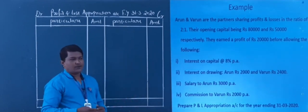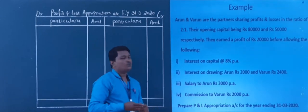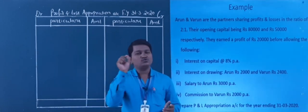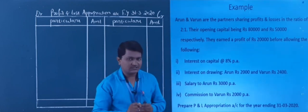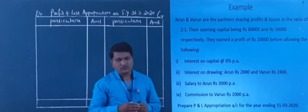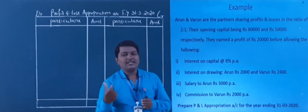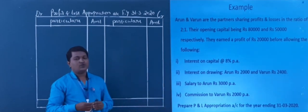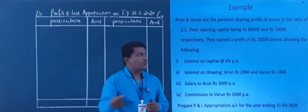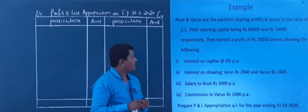First of all, I read the problem. Arun and Varun are partners sharing profits and losses in the ratio of 2:1. Their opening capital being rupees 80,000 and 50,000 respectively. So here, Arun and Varun contributed rupees 80,000 and 50,000 respectively in the business.